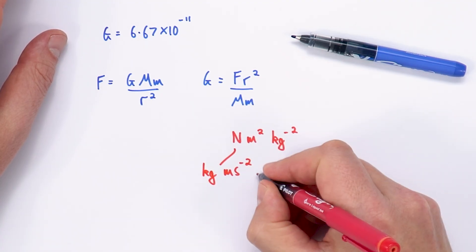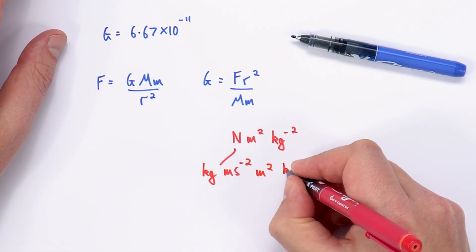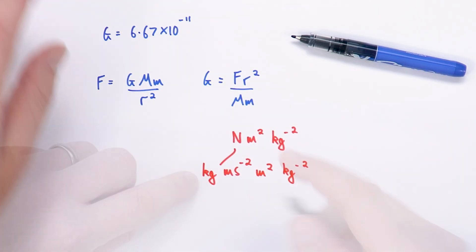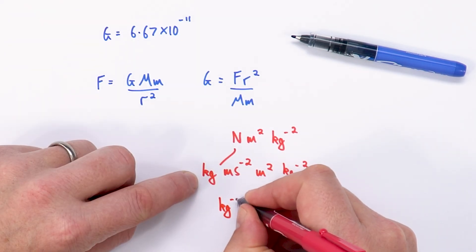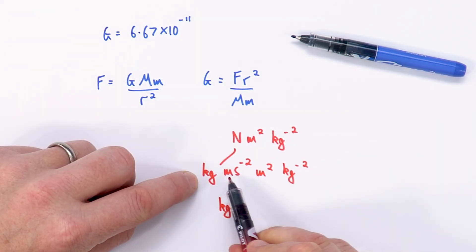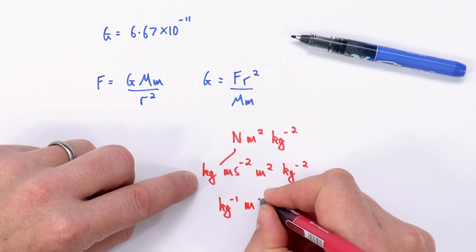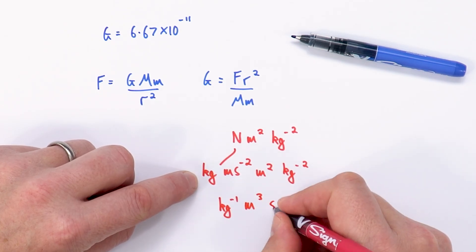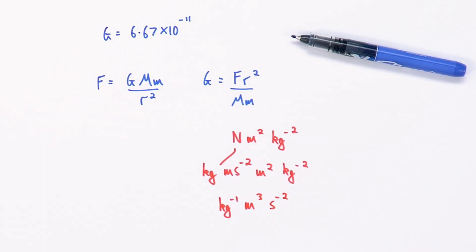And so we're going to multiply this by metres squared and then by kilograms to the minus 2. So that would be kilograms to the minus 1. We've got metres times metres squared so that's going to be metres cubed and then we've got seconds to the minus 2. So we can also express it as kilograms to the minus 1 metres cubed second to the minus 2.